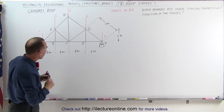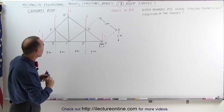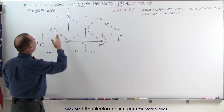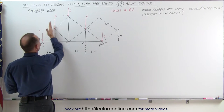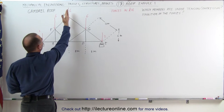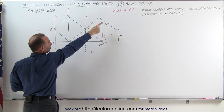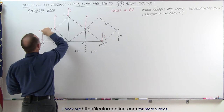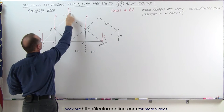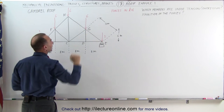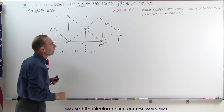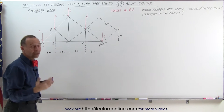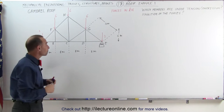Notice that we have some forces acting on the roof from the top. These are all in kilonewtons as indicated with the red letters: 3, 6, 6, 6, and 3 kilonewtons. Let's go ahead and get started.